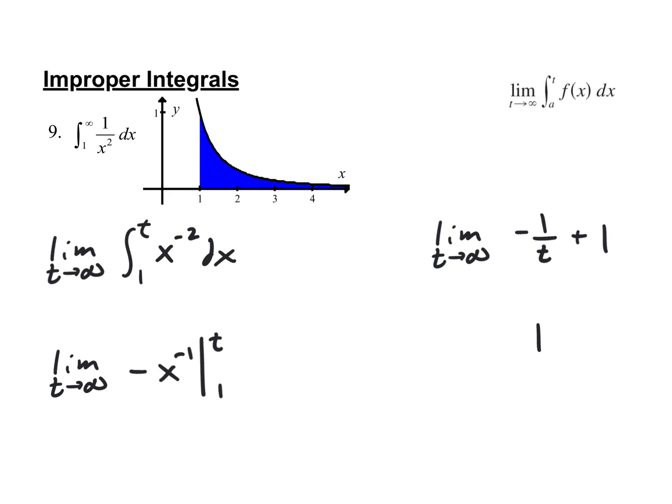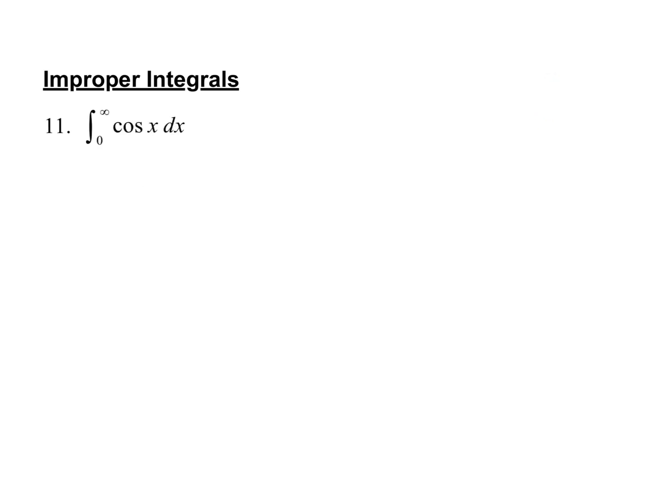Everything the same except for example two this would be negative infinity on the lower limit, b would be up here, and t would be there — everything else is essentially the same. The old trigonometry.